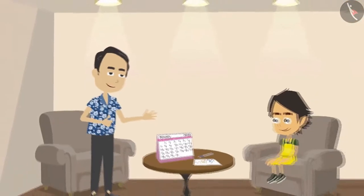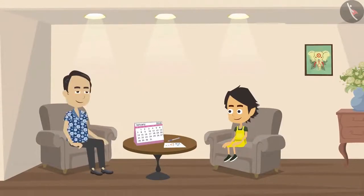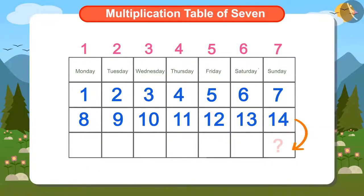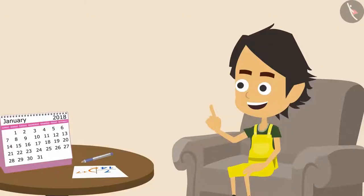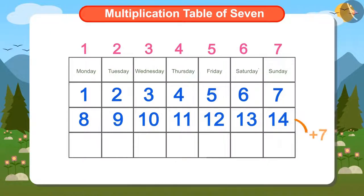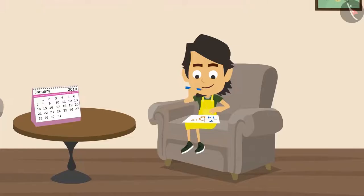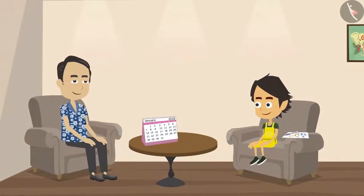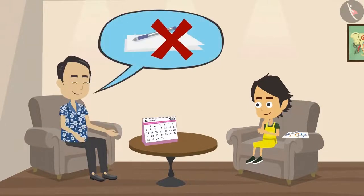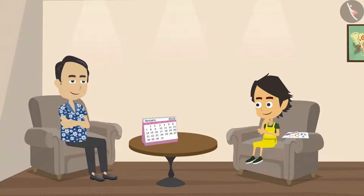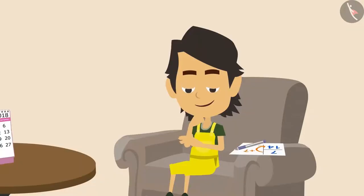Papa complimented Ayushman and further asked what date would it be on the following Sunday after 14th. Ayushman has understood how to find the answer — he has to add 7 to 14. He picks up paper and pen, but Papa stops him. He wants Ayushman to answer this question without paper and pen. Can you help Ayushman?